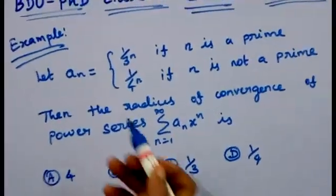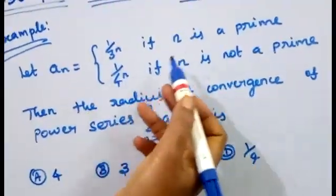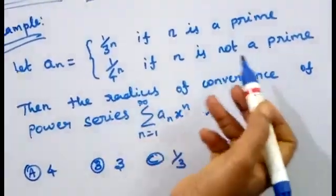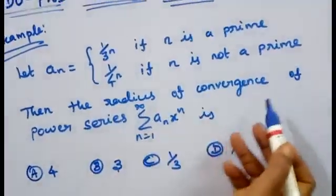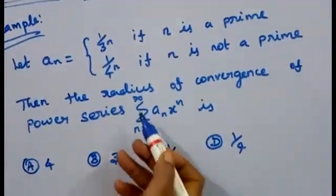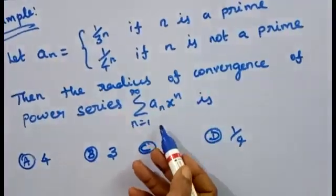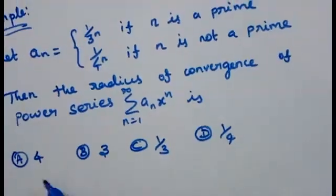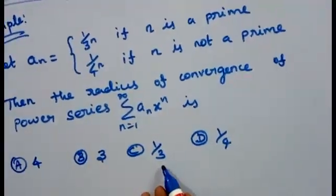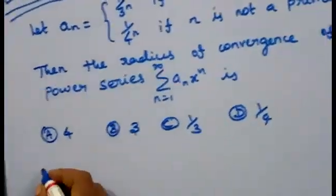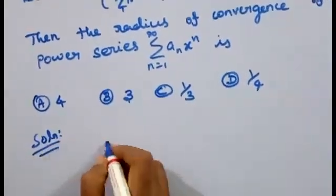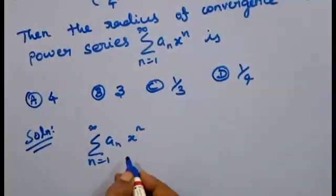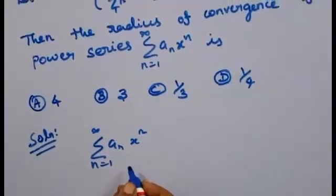Next problem: Let a_n equal (1/3)^n if n is a prime number, and equal (1/4)^n if n is not a prime number. Then the radius of convergence of the power series summation n equal to 1 to infinity a_n times x^n. We have four options: first 4, second 3, third 1/3, and last 1/4. We consider two cases.